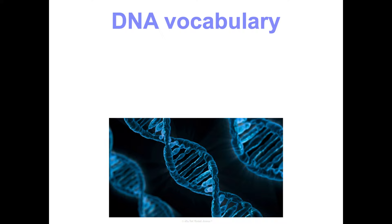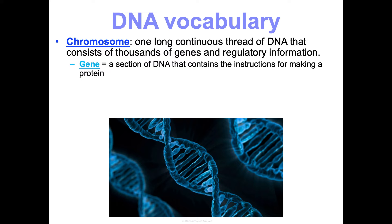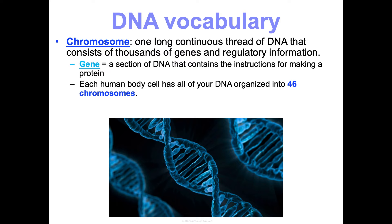I've been using the words DNA and chromosomes somewhat interchangeably, and that's accurate. Your chromosomes are your DNA — chromosomes are just long, continuous threads of DNA that consist of thousands of genes and regulatory information. A section of your DNA that has the instructions for making a protein is called a gene. So one chromosome can have a thousand genes on it. Every one of your body cells as a human has all of your DNA organized into 46 chromosomes.